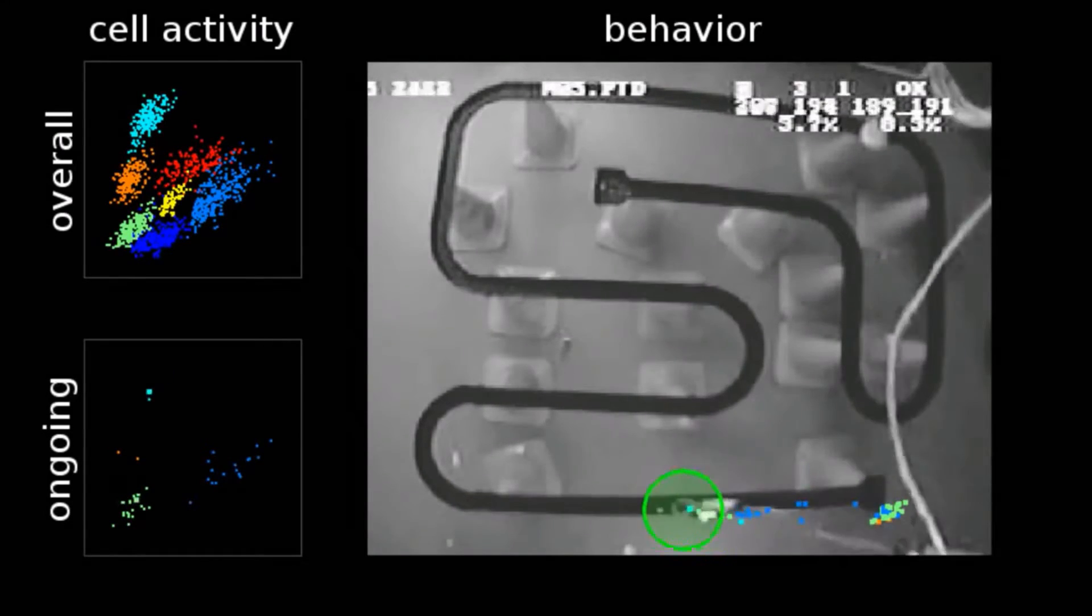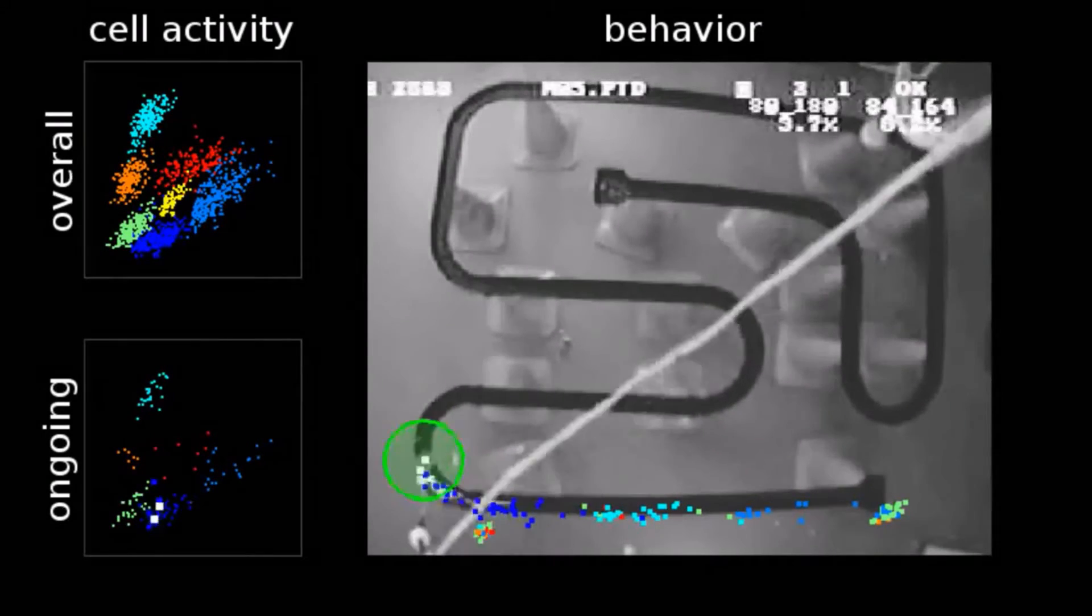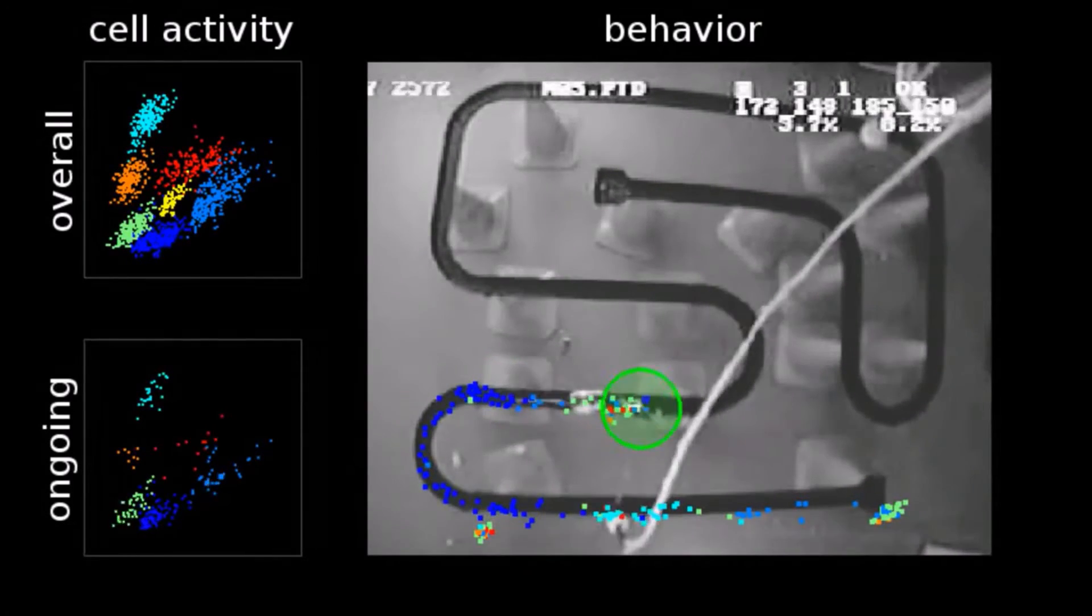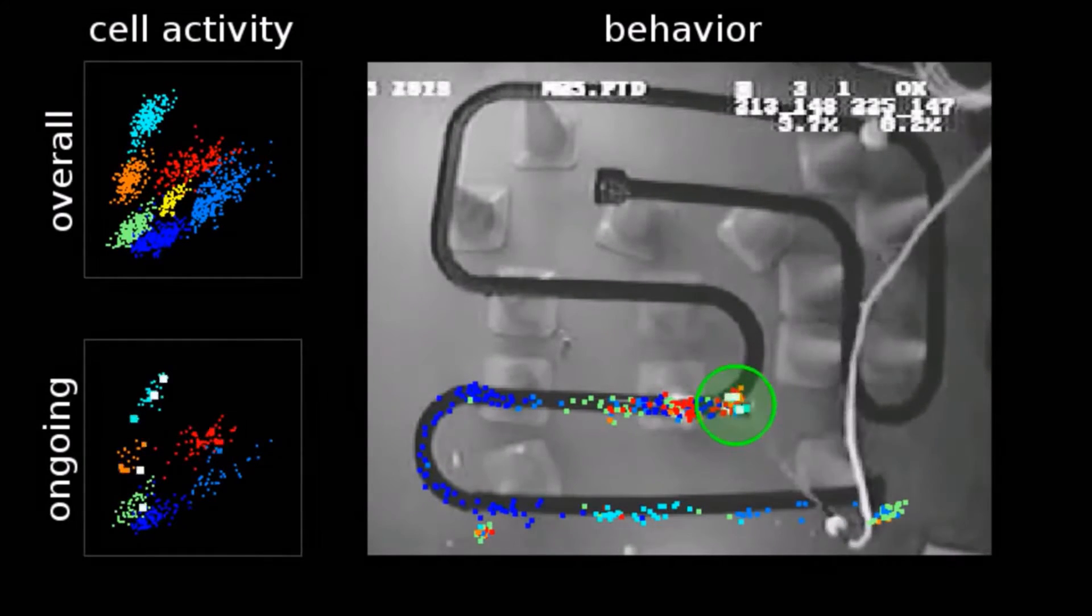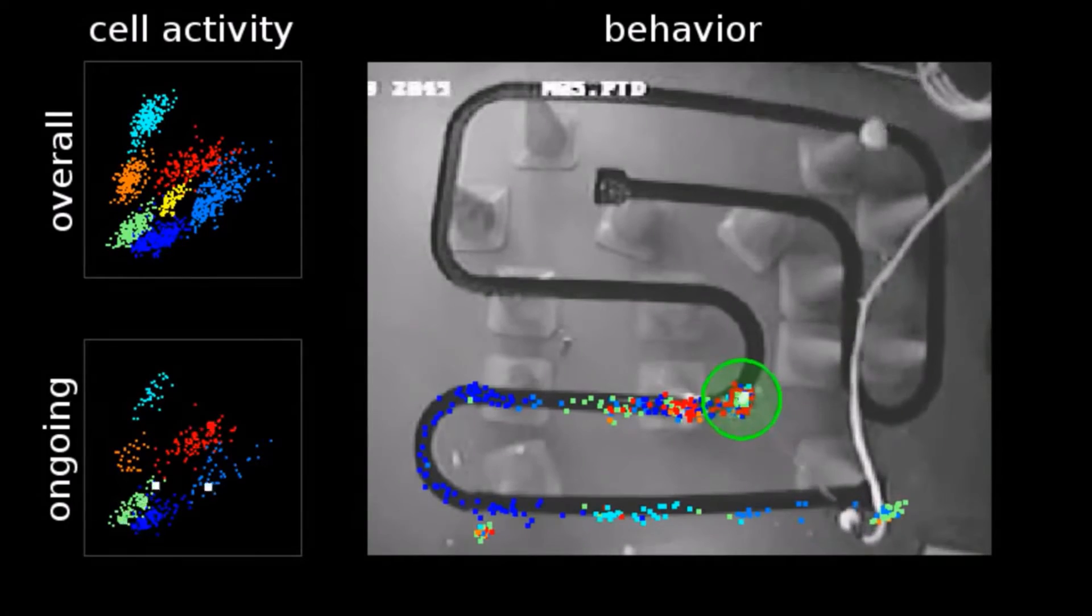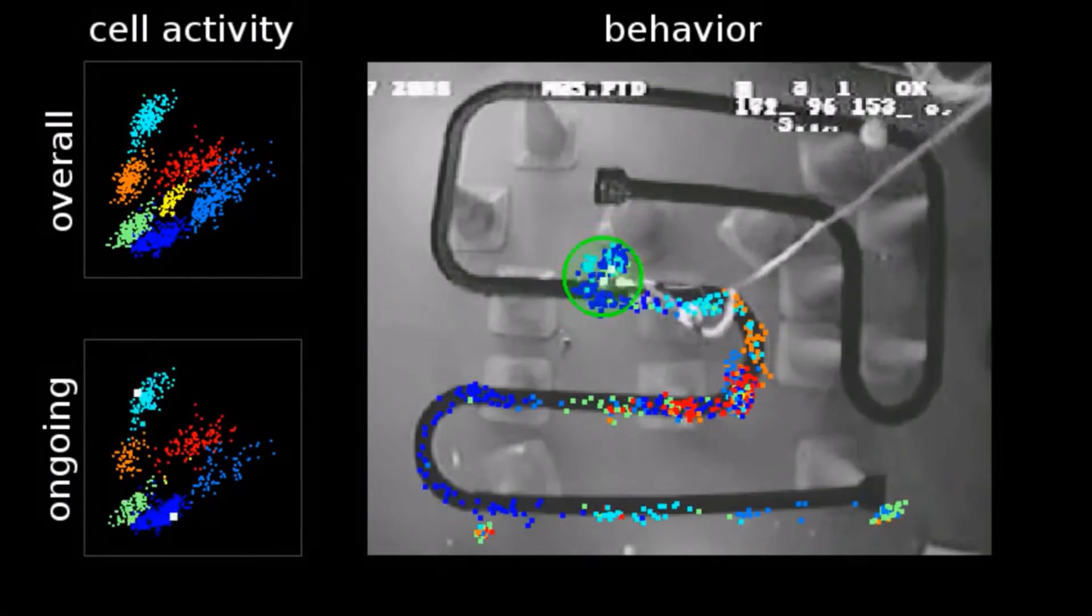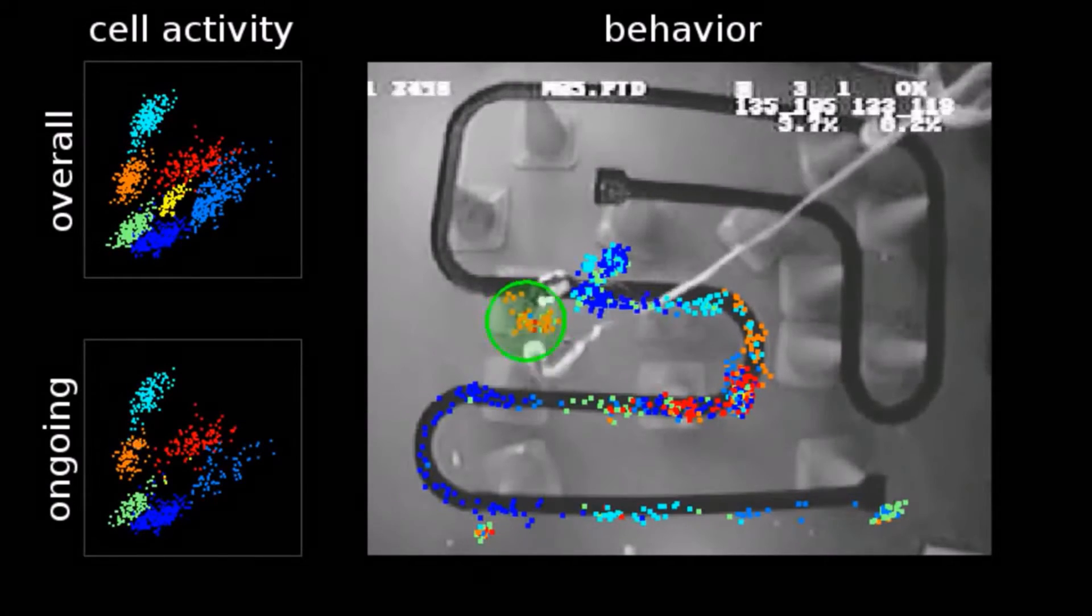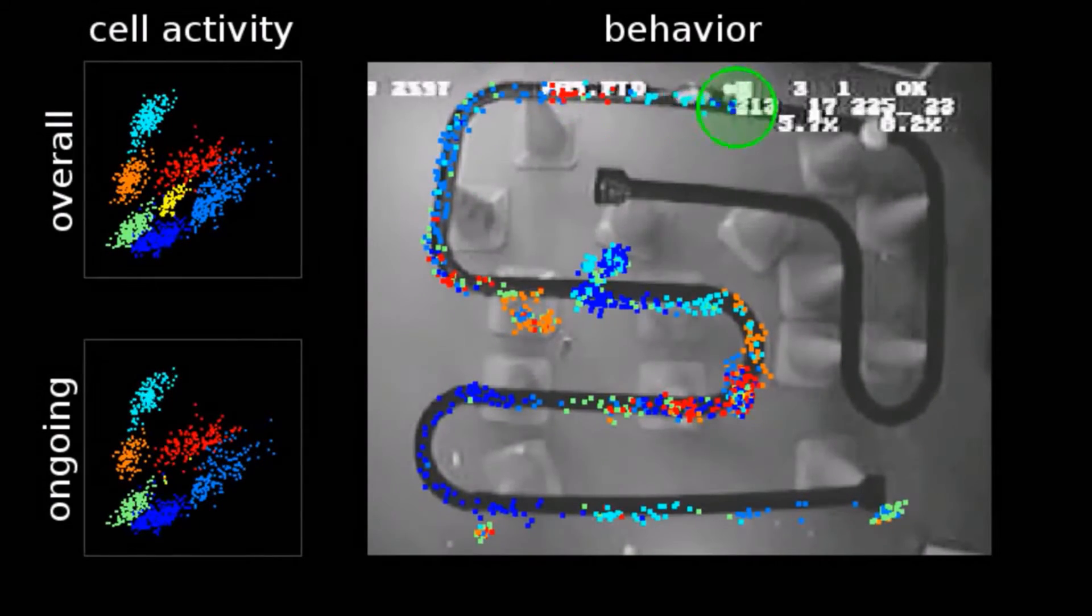This video shows a recording of a mouse's place cells as it travels through a maze. Each color represents a different population of cells in the rat's hippocampus. As you can see, each area of the maze is mapped onto a different group of place cells, allowing the mouse to determine where in the maze it currently is. These areas are called place fields, and depending on which place field the mouse is in, the cells will fire.